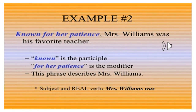In the second example: 'Known for her patience, Mrs. Williams was his favorite teacher.' Here the word 'known' becomes the participle because it is describing the character of Mrs. Williams.